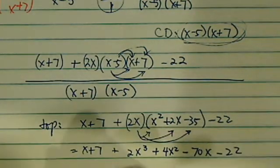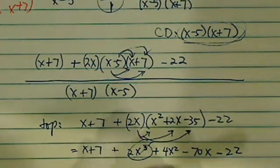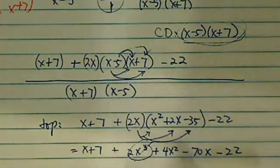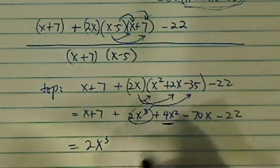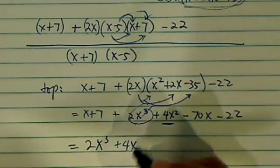Okay, now let's gather our terms. This one, 2x cubed. The reason I crossed it out is so I know how I'm bookkeeping it. This one is all by itself, 4x squared.